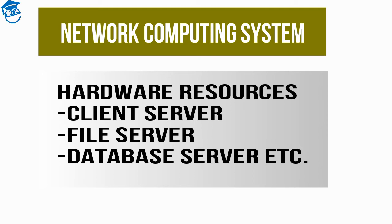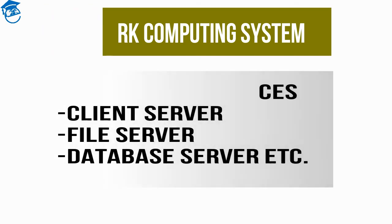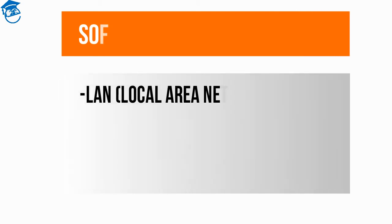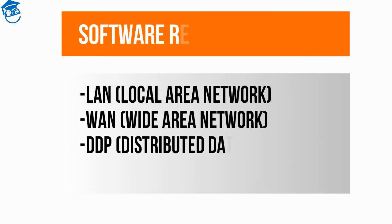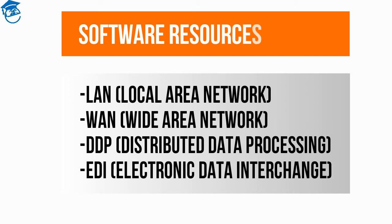Moving on to software resources in network computing. We are all familiar with LAN, WAN, DDP, and EDI. In a local area network, two or more computers are located within a small well-defined area such as a room, office, or campus and are connected via cables. One computer acts as a server and stores programs and data files centrally. These can be accessed by other computers on the LAN, which provides the advantage of sharing programs, data, and physical resources like hard disks and peripherals.